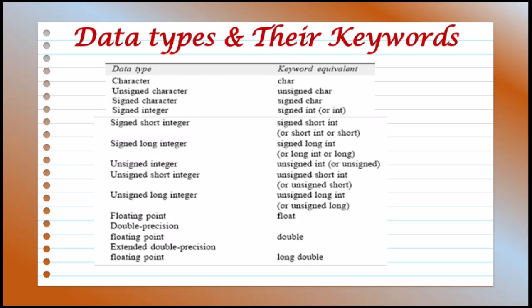For unsigned integer, the keyword used is unsigned int. For unsigned short integer, the keyword is unsigned short int. For unsigned long integer, the keyword used is unsigned long int. For floating point, the keyword used is float. For double precision floating point, the keyword is double. And for extended double precision floating point, the keyword used is long double.